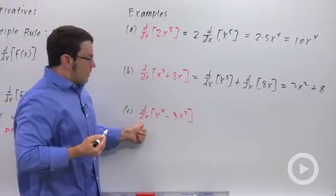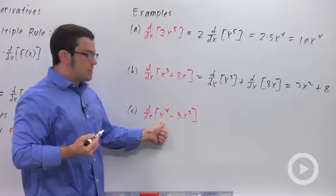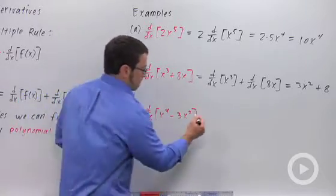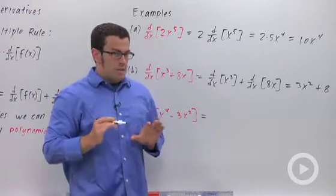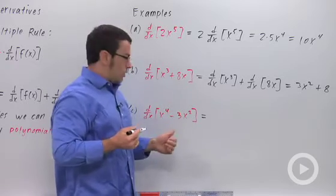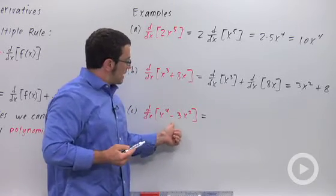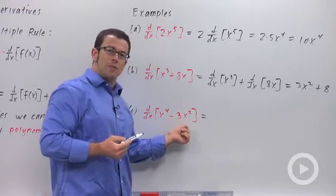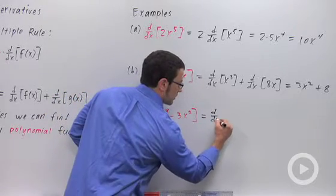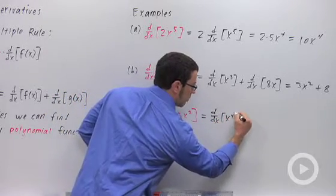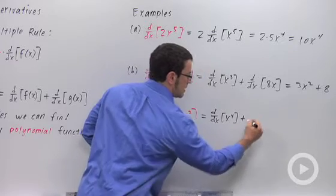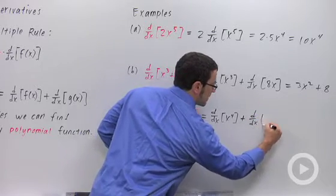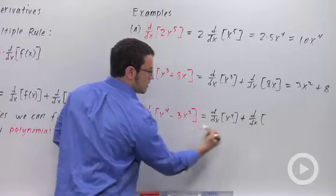Finally, let's take a look at this: the derivative with respect to x of x to the fourth minus 3x squared. So again, we're going to use the sum rule and the constant multiple rule. This is the same as x to the fourth plus negative 3 times x squared. So this is the derivative with respect to x of x to the fourth plus the derivative with respect to x of negative 3 times x squared.